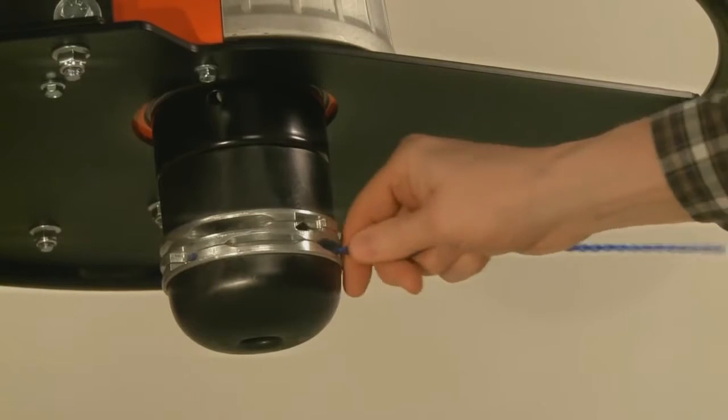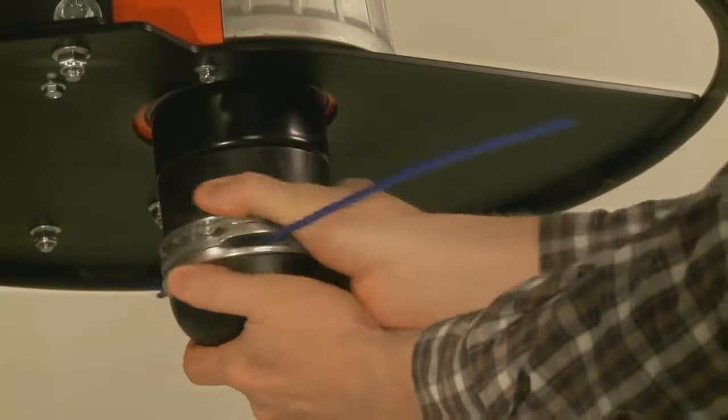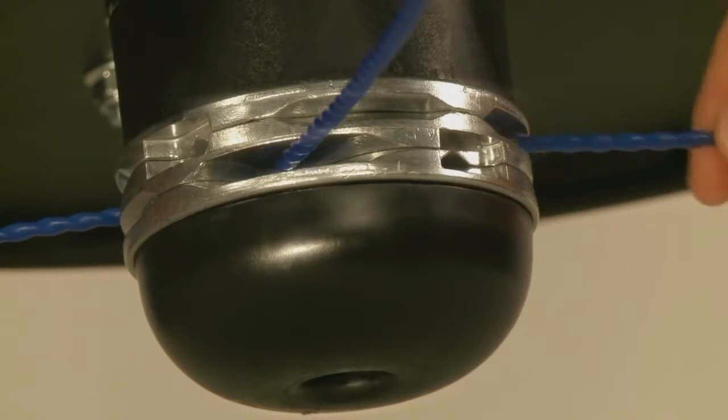To install, simply insert your trimmer cord into the opening and push it through until it pokes out about an inch on the other side.